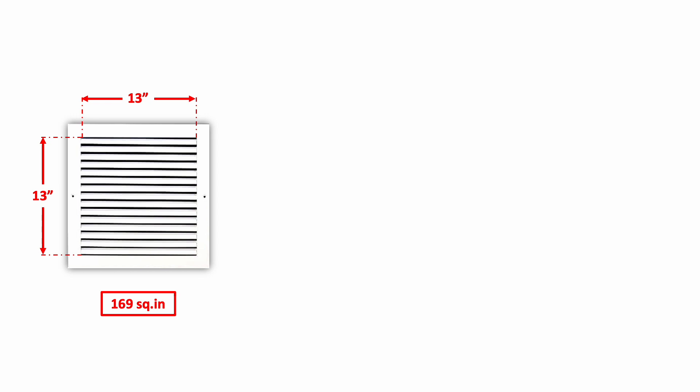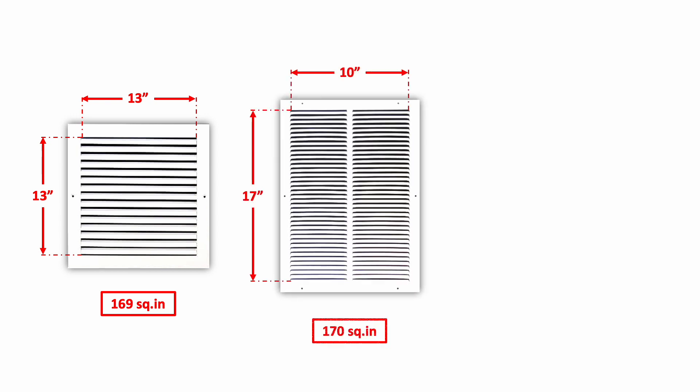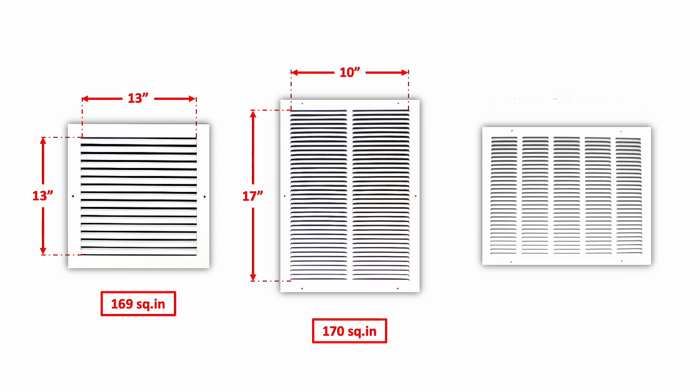Or, we can use a vertical shaped grill like 10 inches by 17 inches — that will be 170 square inches. We can also use a horizontal shaped grill such as 40 inches by 12 inches. The important thing is the grill area: multiply the width and the height of the grill and make sure it is greater than the grill area calculated using the formula.